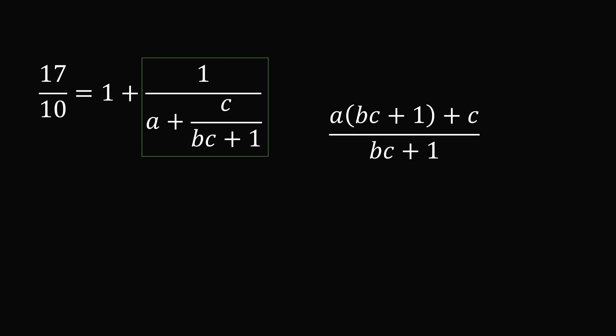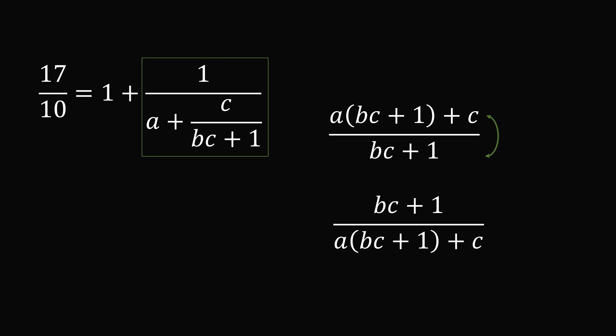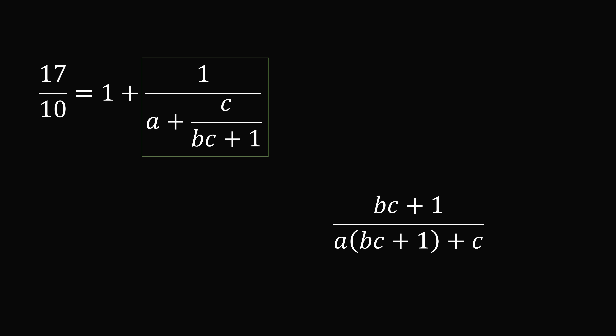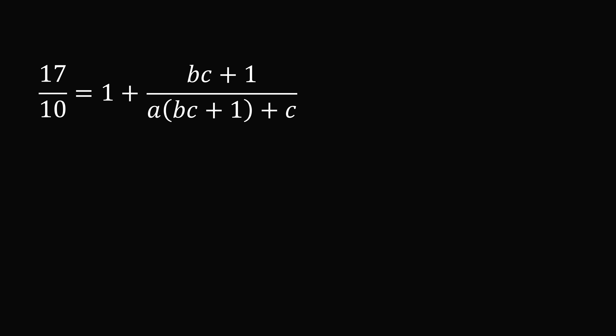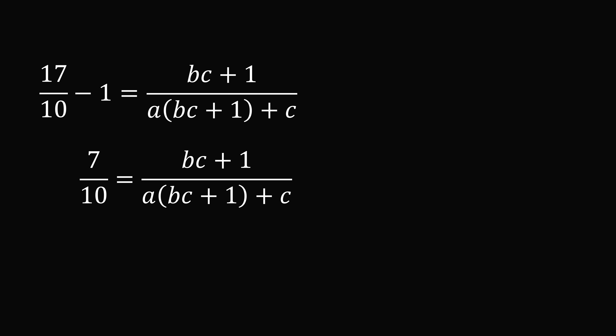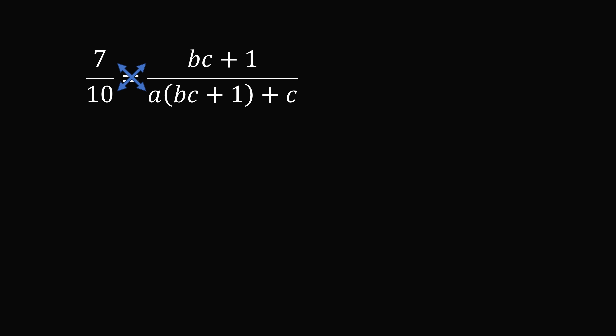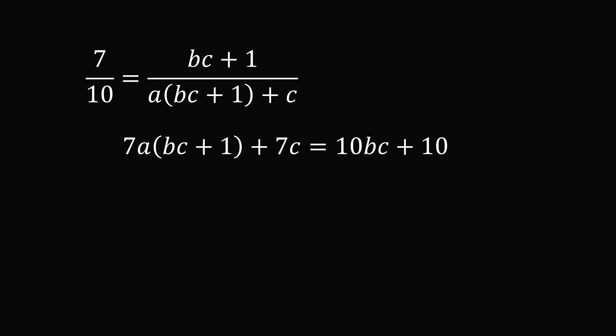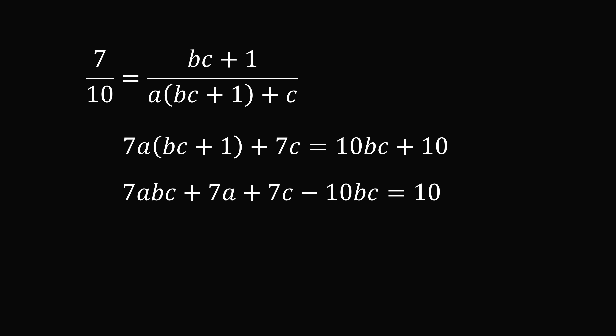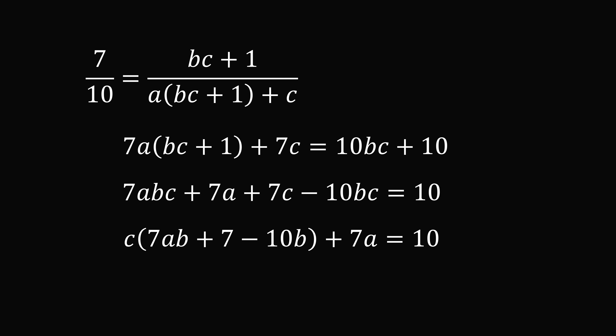Once again, we take the reciprocal, switching numerator and denominator, ending up with bc plus 1 all over a multiplied by bc plus 1 plus c. We now substitute that in and subtract 1 from both sides. 17 over 10 minus 1 equals 7 over 10, which equals bc plus 1 all over a multiplied by bc plus 1 plus c. We will now cross multiply. The 7 gets multiplied by the denominator of the other fraction, and 10 gets multiplied by bc plus 1. Simplifying gives 7a times bc plus 1 plus 7c equals 10bc plus 10. Let's subtract 10bc from both sides and factor out c, giving c times the quantity 7ab plus 7 minus 10b plus 7a equals 10. So let's solve this equation for c.